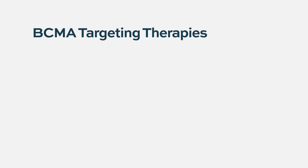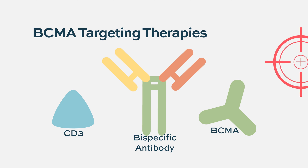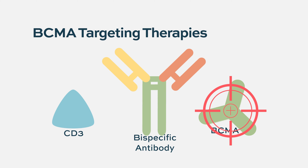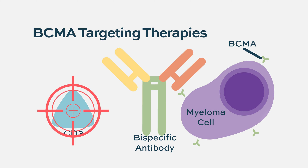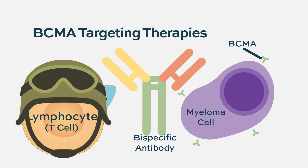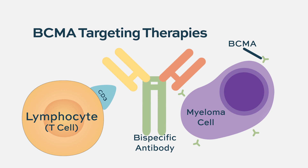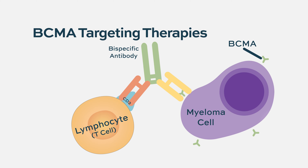We also have what we call bispecific antibodies, and they are also called T-cell engagers. These antibodies can target two antigens: BCMA on the malignant cell, and also another antigen called CD3, which is a marker of the lymphocytes. The lymphocytes are the soldiers capable of killing the malignant plasma cell. With a bispecific antibody, the drug catches the lymphocyte, brings it to the malignant plasma cell, links it there, and through the BCMA, induces the killing cascade.